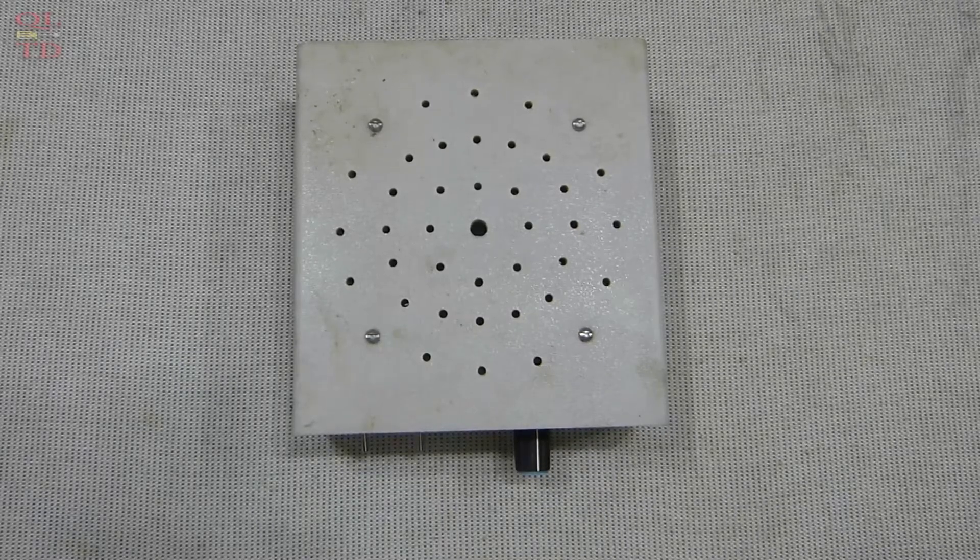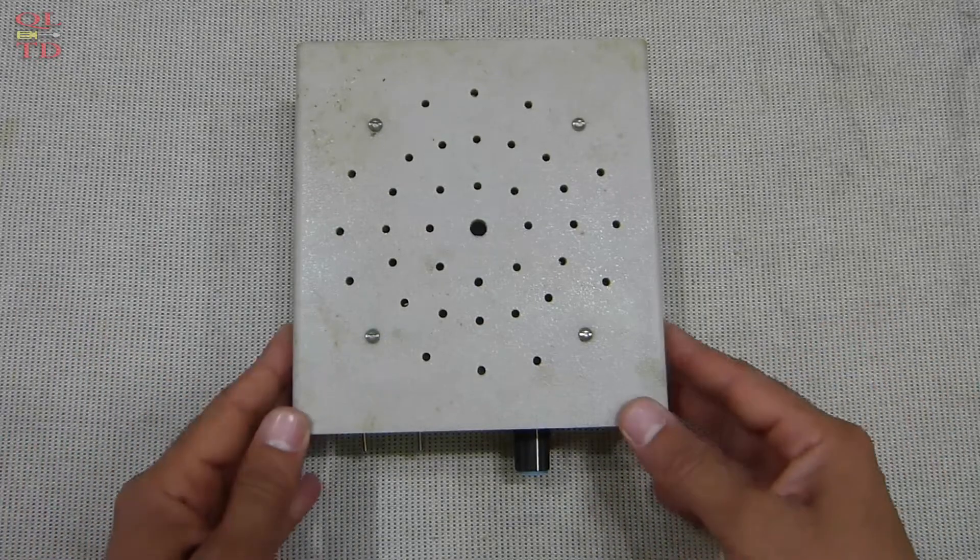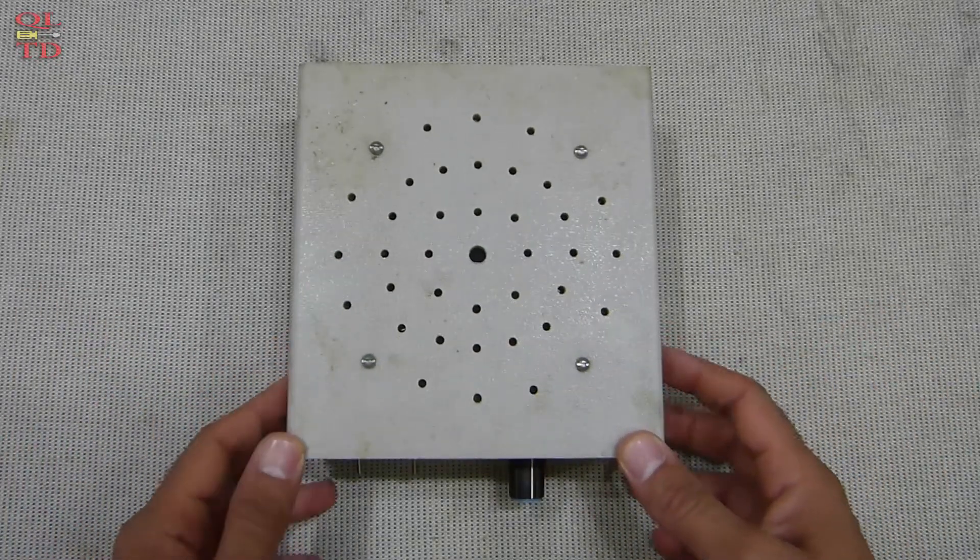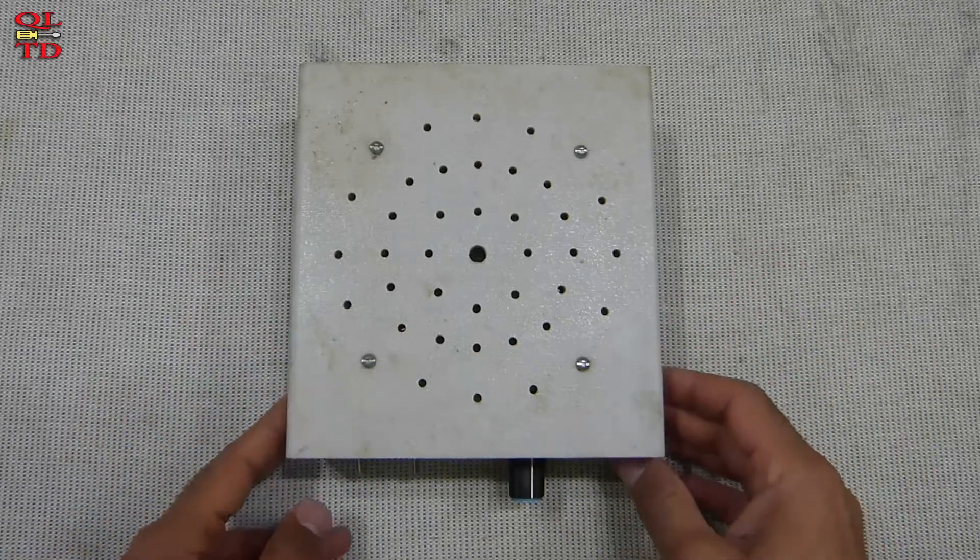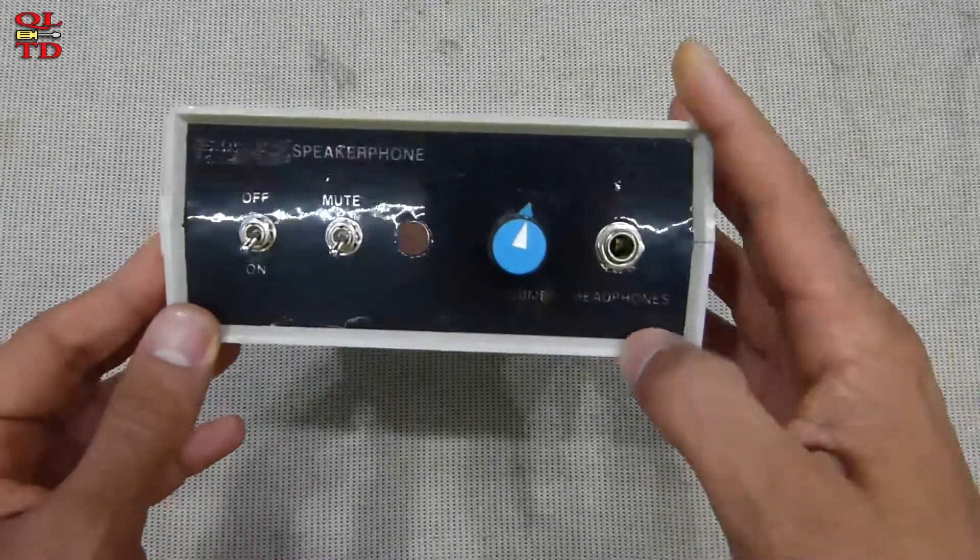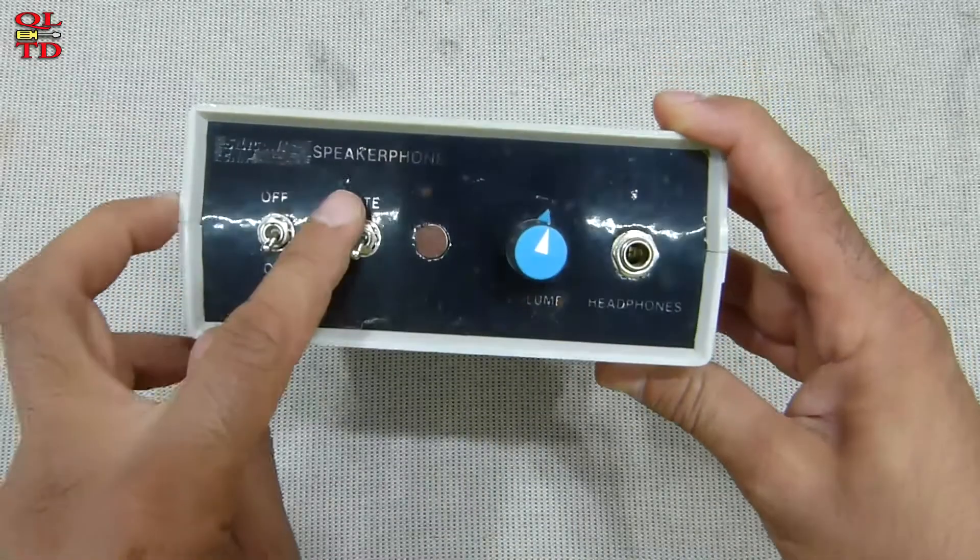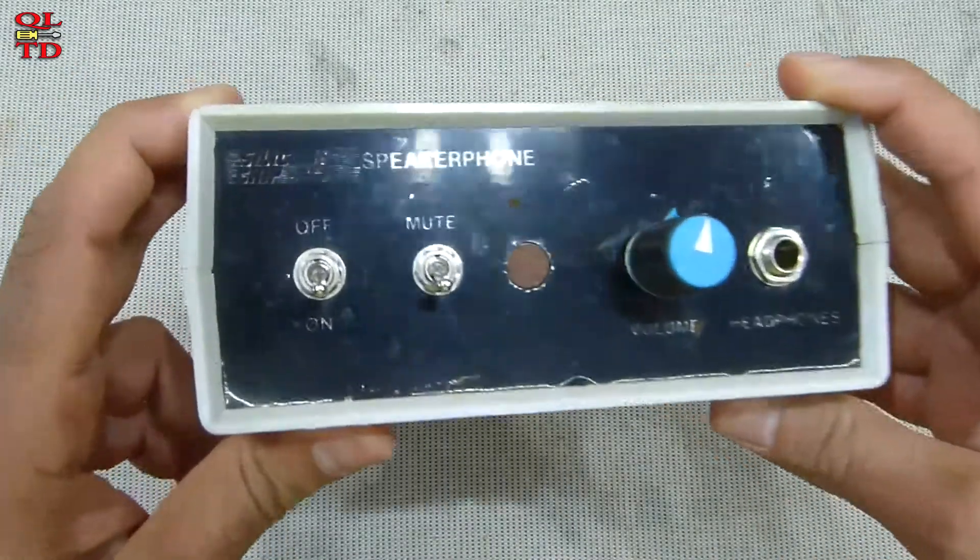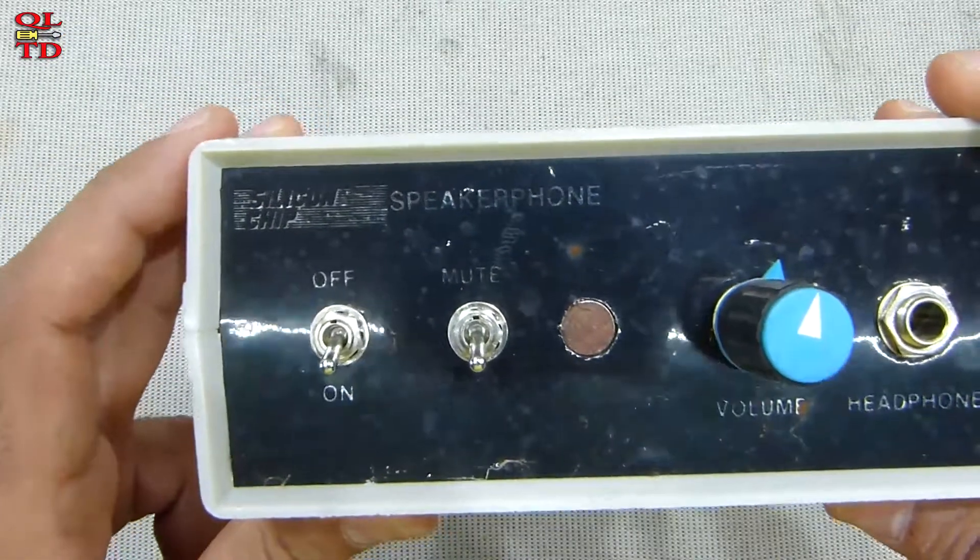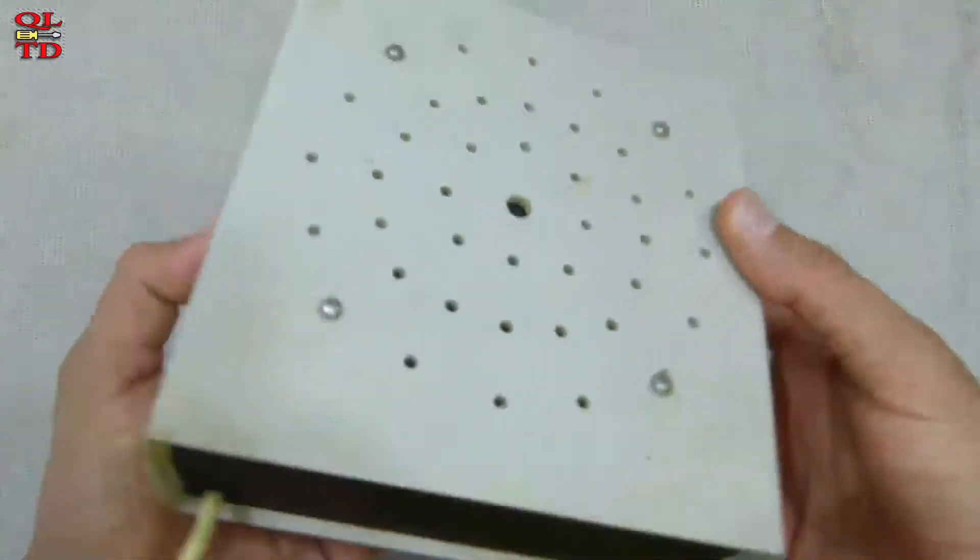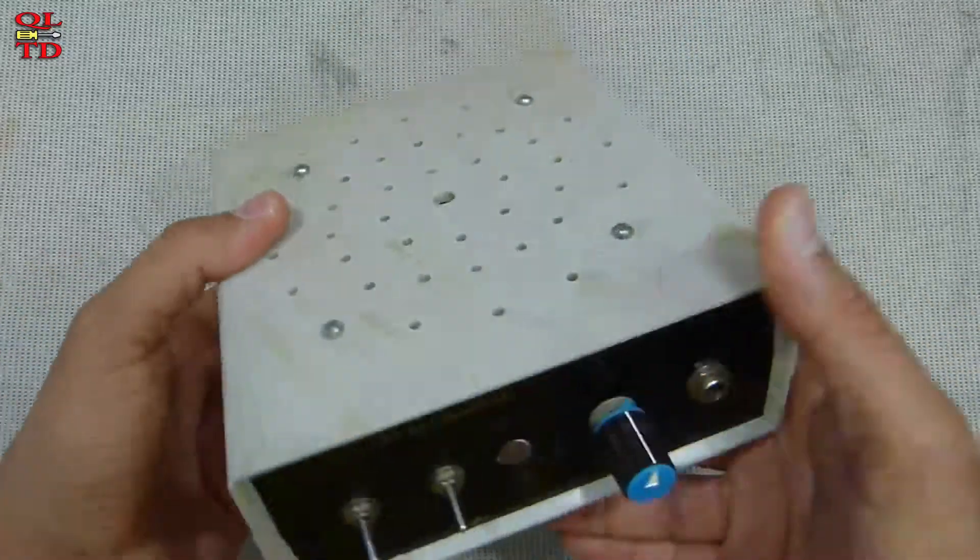Hello everyone and welcome back to another video. In this video, we'll have a look at what's inside this device, which I found in the dumpster. It's a speakerphone made by Silicon Chip, but it looks like a homemade DIY job.